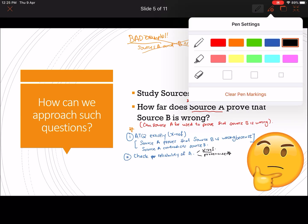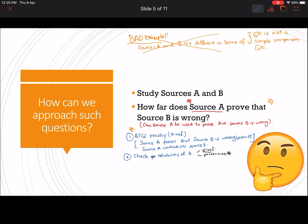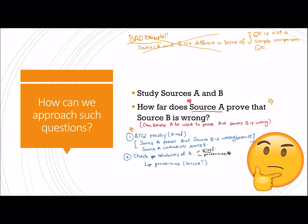So step number two, check the reliability of source A. I will personally do it through checking the provenance, to see whether the source is biased or not, and to find out why it will be biased or why it is not biased. And of course, you must remember to write your linking statement.